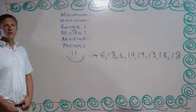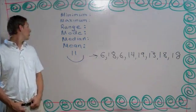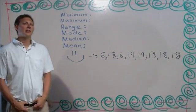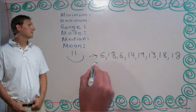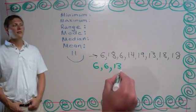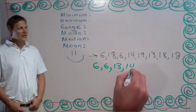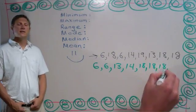The first thing I like to do is put these numbers in order from least to greatest. That way it will be easier to find certain numbers later on. So, we have 6, 6, 13, 14, 18, 18, 18, and 19.